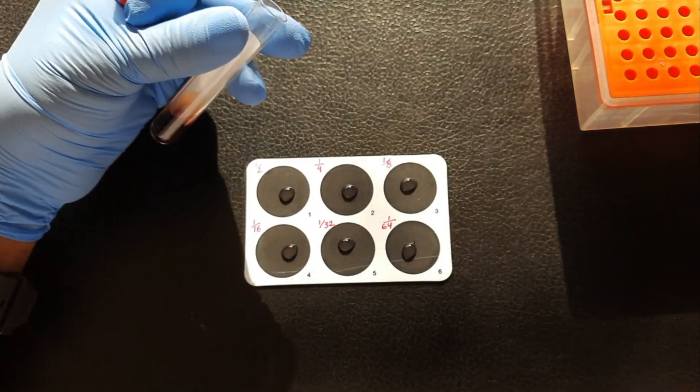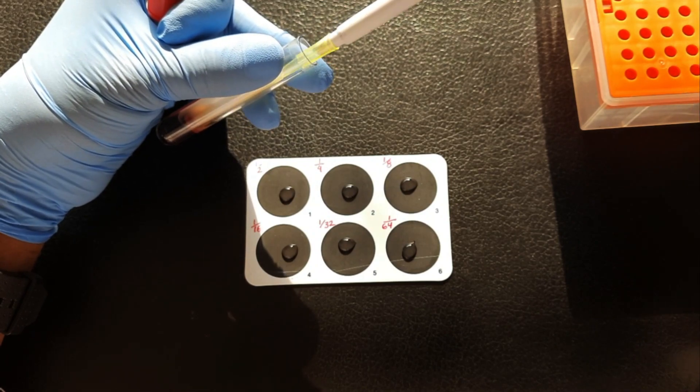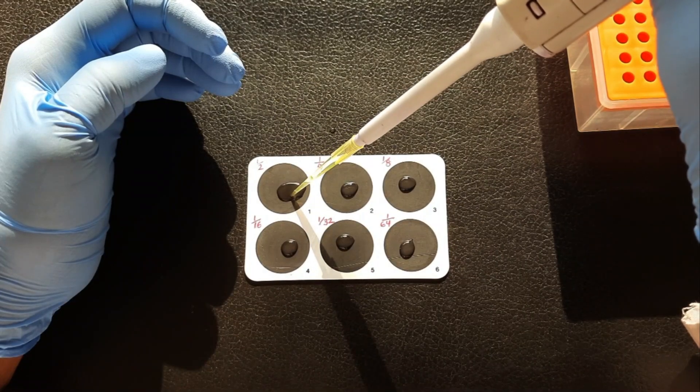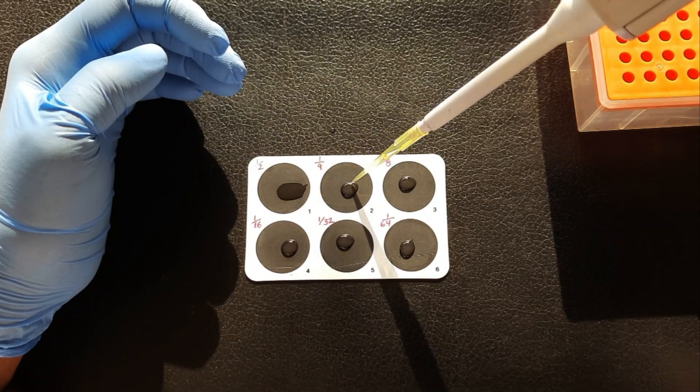Then, place 50 microliter of serum sample on circle 1 and mix it properly by pressing the plunger of micro pipette 3 to 4 times, and take 50 microliter of this mixture from circle 1, place it on circle 2, and mix again.